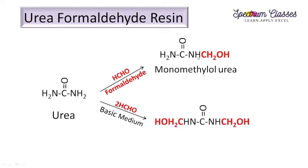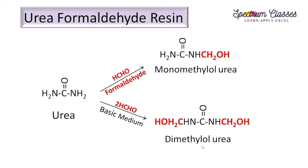Here we get reaction on one nitrogen, but in this case with two formaldehyde molecules it reacts on both the nitrogen atoms, and here again we get CH2OH. The name of the product when it reacts in a 1:1 ratio is monomethylol urea, and when it reacts on both the nitrogen atoms that is dimethylol urea. OL stands for OH groups.